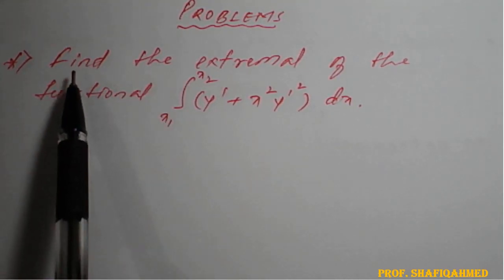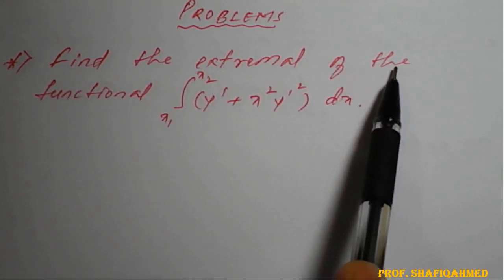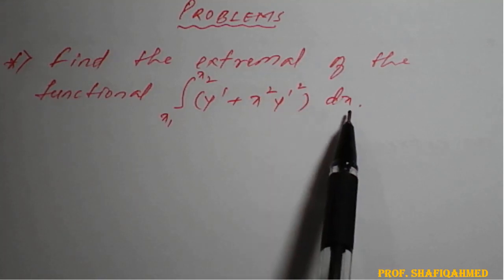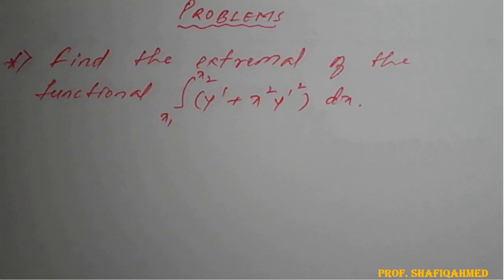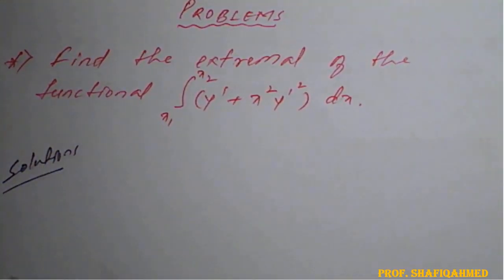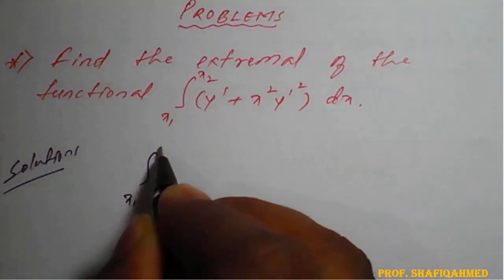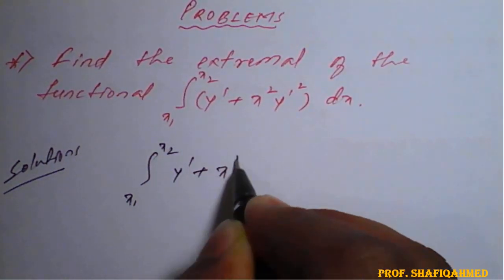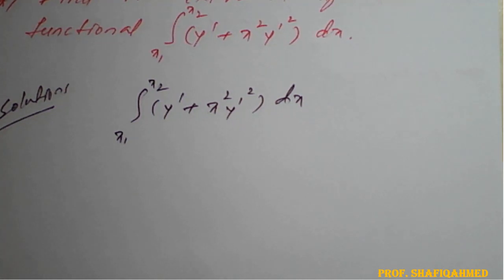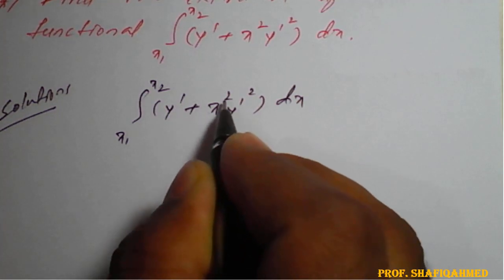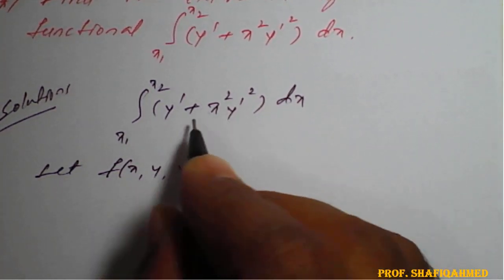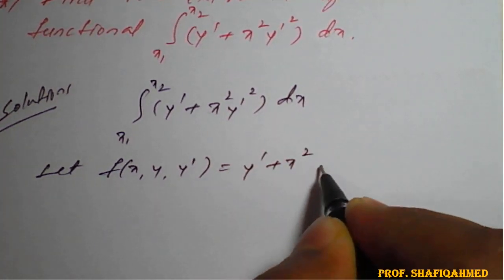The problem is to find the extremal of the functional: integration from x1 to x2 of (y' + x² y'²) dx. The given integral is integration x1 to x2 of (y' + x² y'²) dx. We consider f(x, y, y') equal to the integrand, that is y' + x² y'².